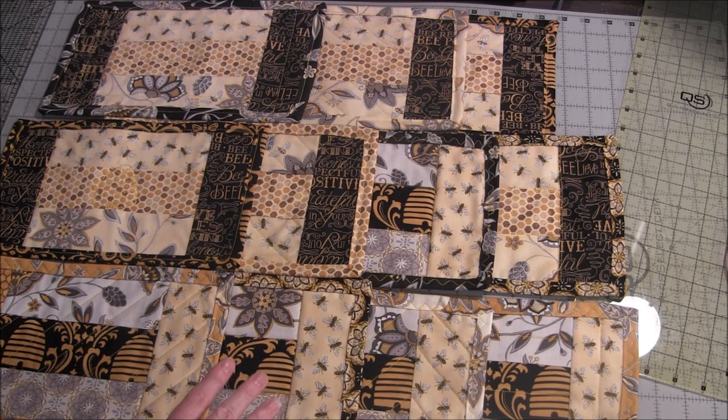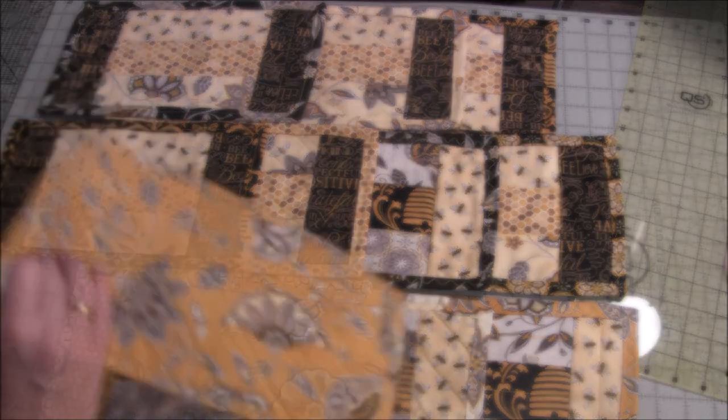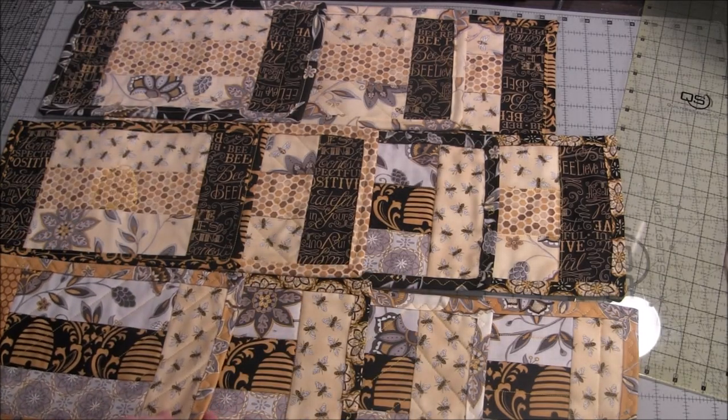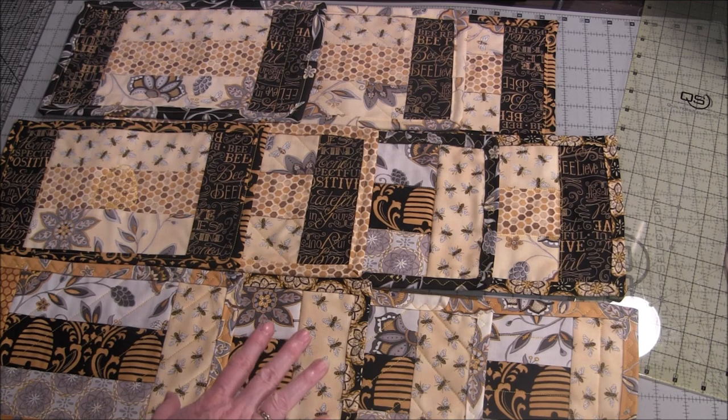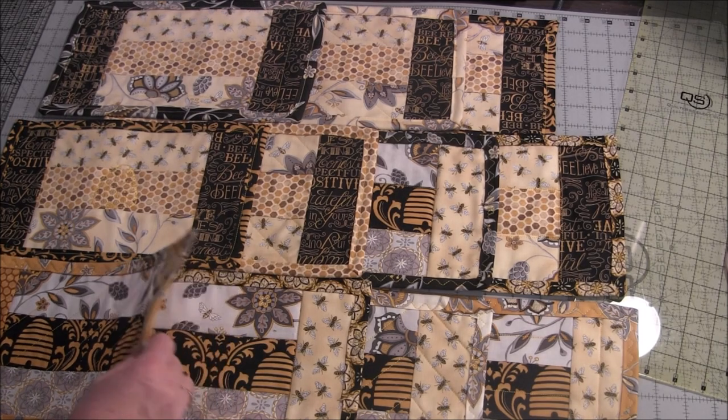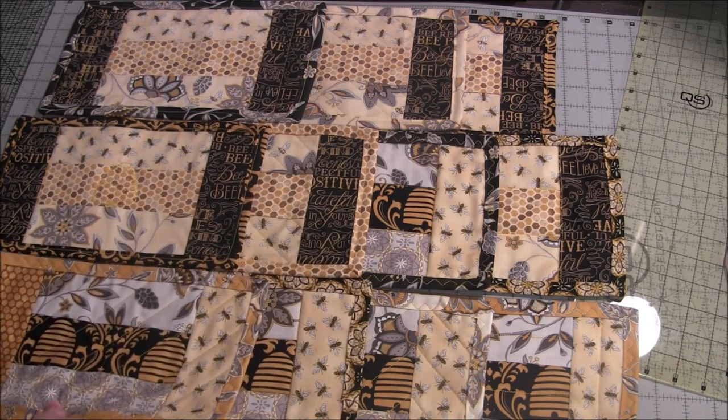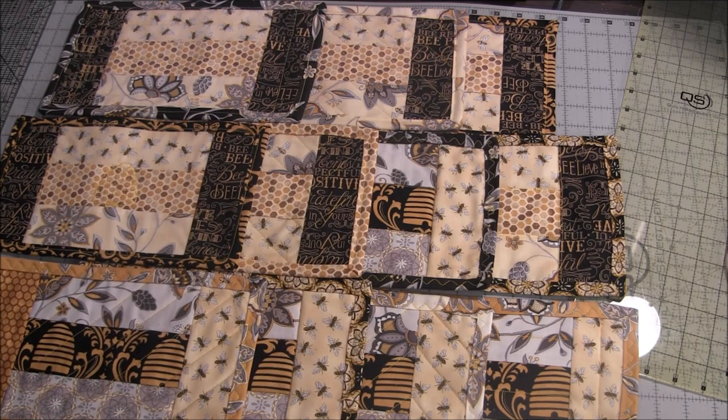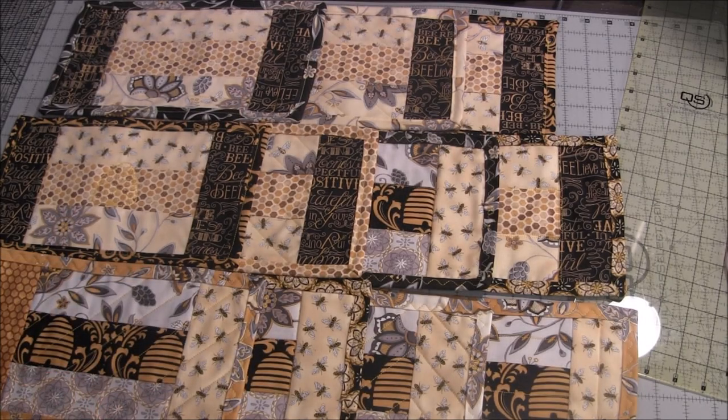You will also need some fat quarters or some yardage to use for the backing. If you're making a set of six mug rugs, you would need two fat quarters for the six mug rugs. You will also need some pellon or batting, quilt batting, to put in between the layers. This is a great project to use your leftover batting.